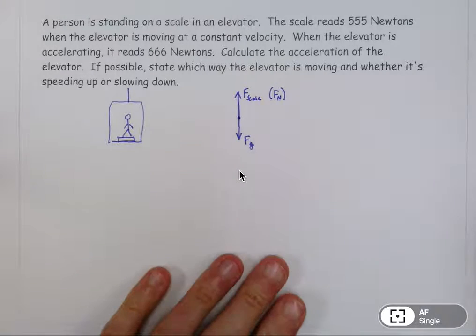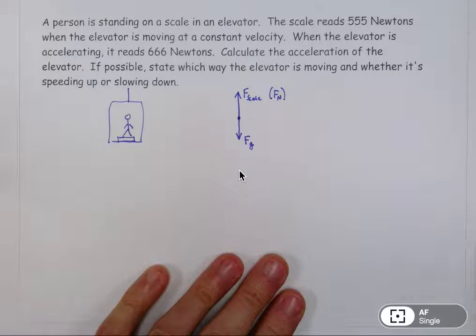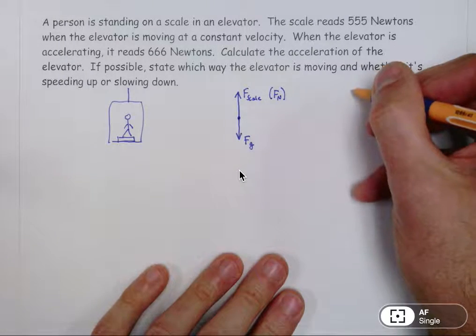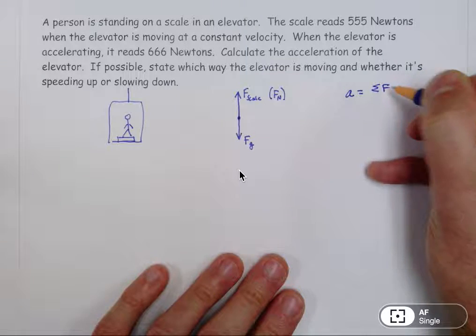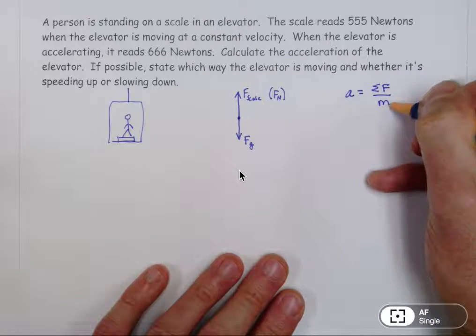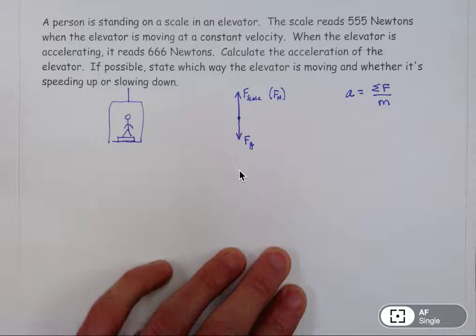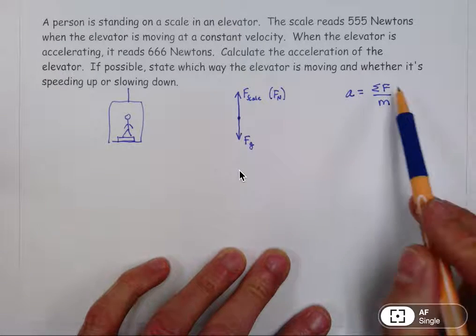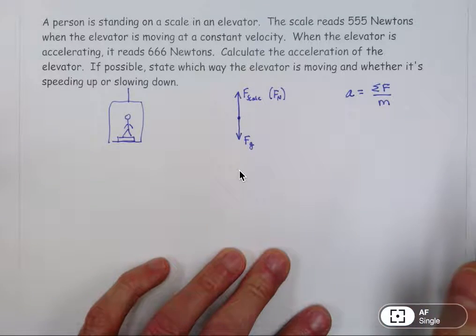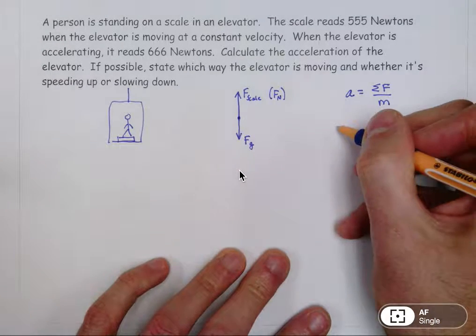Whenever you draw a free body diagram, the reason to do that is so that you can use this equation. Acceleration equals the sum of the forces divided by the mass. And the question here is to find the acceleration of the elevator. And so that's how we're going to do it using this equation right here.